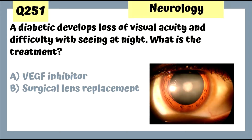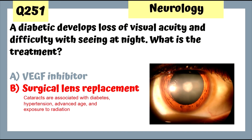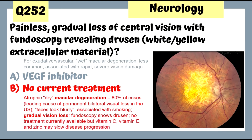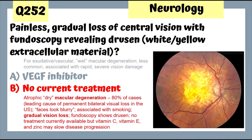Question 251: A diabetic with loss of visual acuity and difficulty seeing at night has a cataract — surgical lens replacement is the treatment. Cataracts are associated with diabetes, hypertension, advanced age, and radiation exposure. Question 252: Painless gradual loss of central vision with fundoscopy revealing drusen is macular degeneration. The dry type is more common and has no treatment; vitamins C, E, and zinc may slow progression. The wet vascular type does have treatment — a VEGF inhibitor.